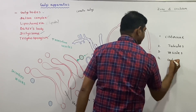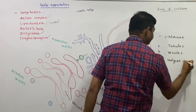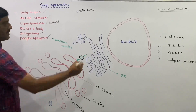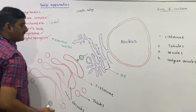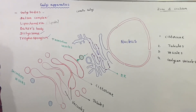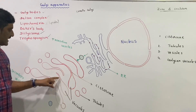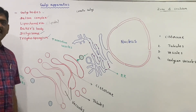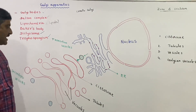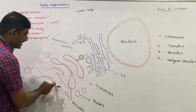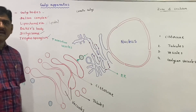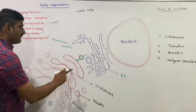The Golgi ground substance has four types of components: cisternae, tubules, vesicles, and Golgi vacuoles. Cisternae are near the nuclear membrane and endoplasmic reticulum. They are parallelly arranged, sac-like structures that are slightly curved. In the Golgi apparatus, these slightly curved structures are known as cisternae.